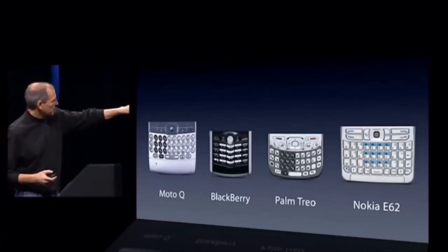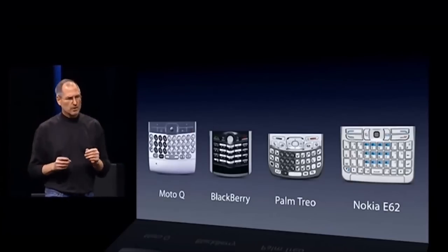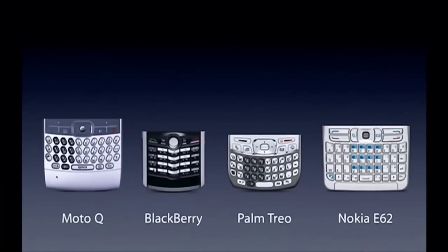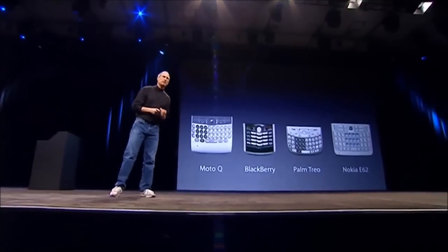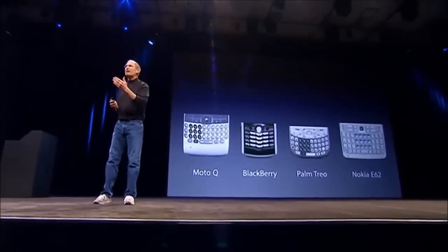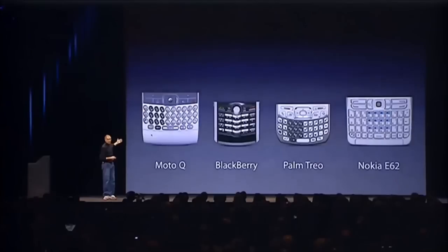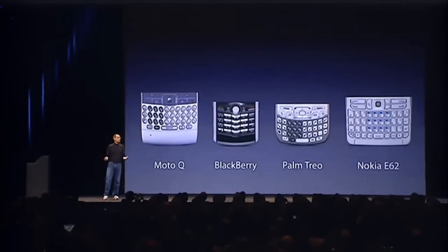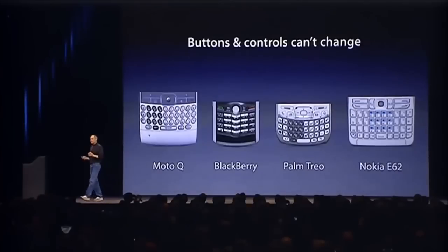It's this stuff right here — they all have these keyboards that are there whether you need them or not, and they all have these control buttons that are fixed in plastic and are the same for every application. Well, every application wants a slightly different user interface, a slightly optimized set of buttons just for it. And what happens if you think of a great idea six months from now? You can't add a button to these things — they're already shipped. The buttons and controls can't change for each application, and they can't change down the road if you think of another great idea you want to add.